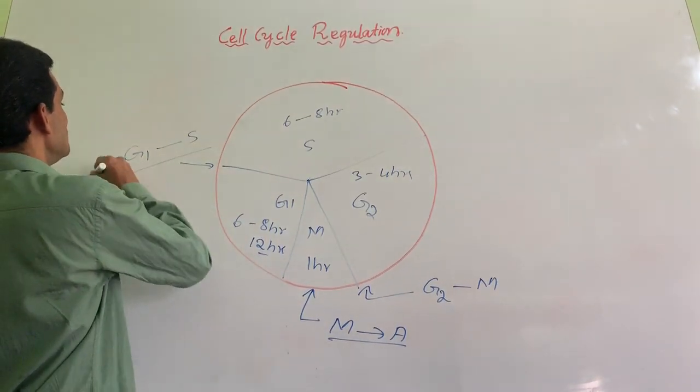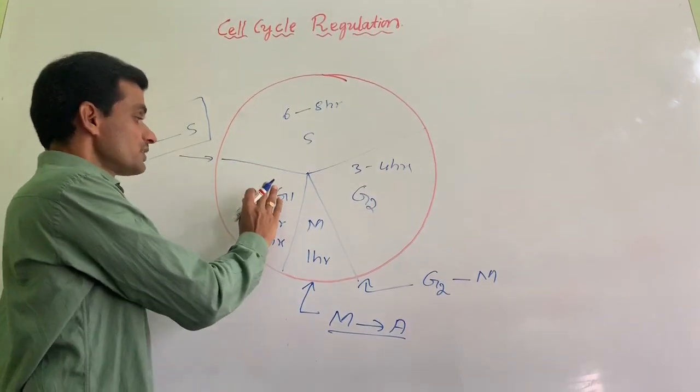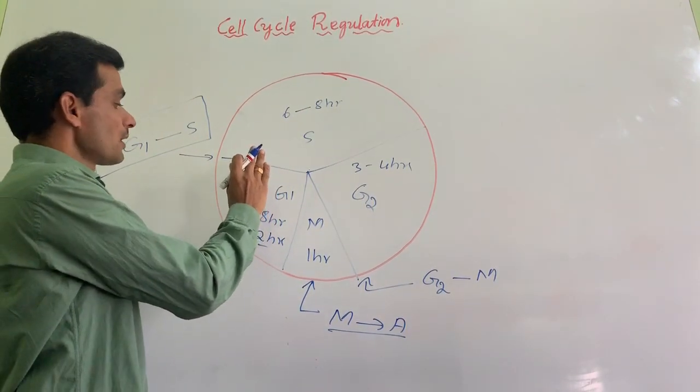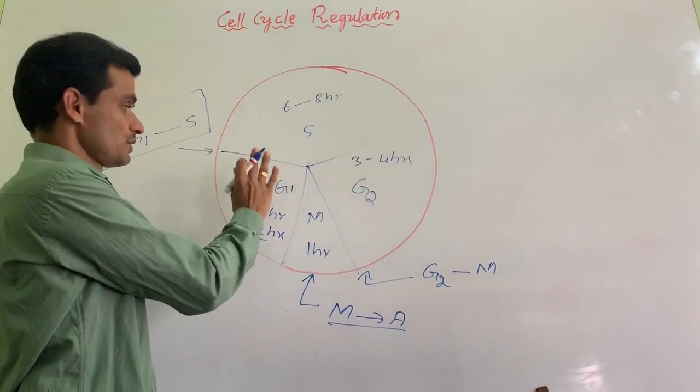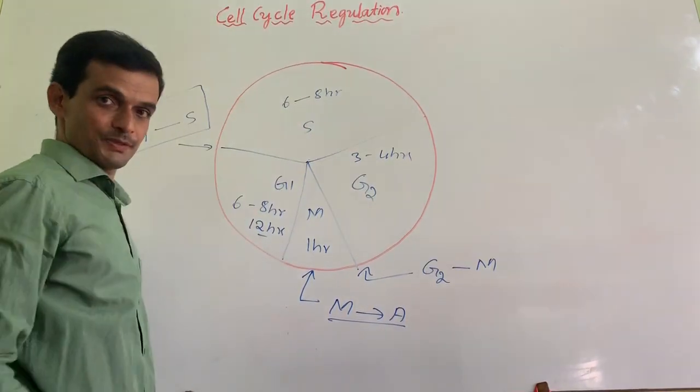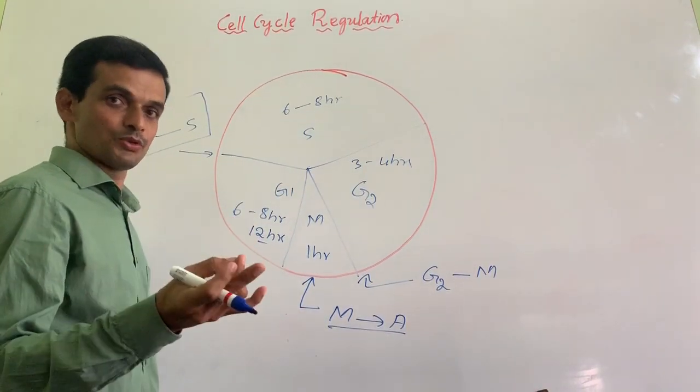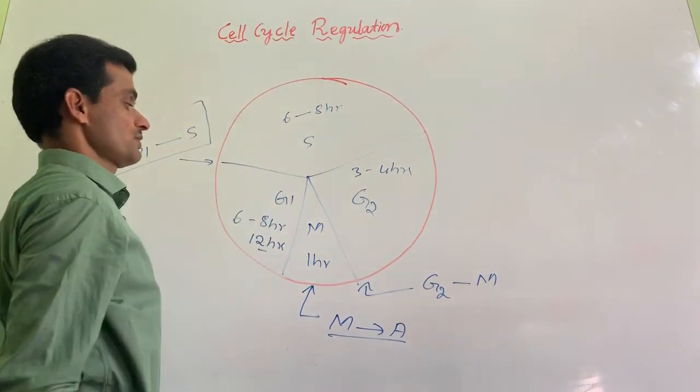Let me go back to this G1-S checkpoint. The cell has completed its growth and protein synthesis process in G1 phase. The cell is prepared to go to S phase. The cell has sufficient enzymes, nutrients, and proteins. Now, the cell is permitted to go to S phase.